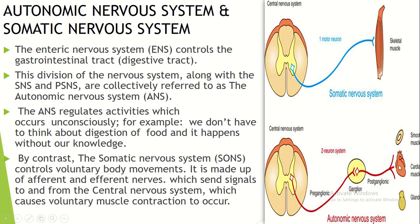The Autonomic Nervous System operates without our conscious control, affecting smooth muscles, cardiac muscles, and glands. In the brain and spinal cord, signals go directly to a ganglion. This pathway is described as pre-ganglionic and post-ganglionic.